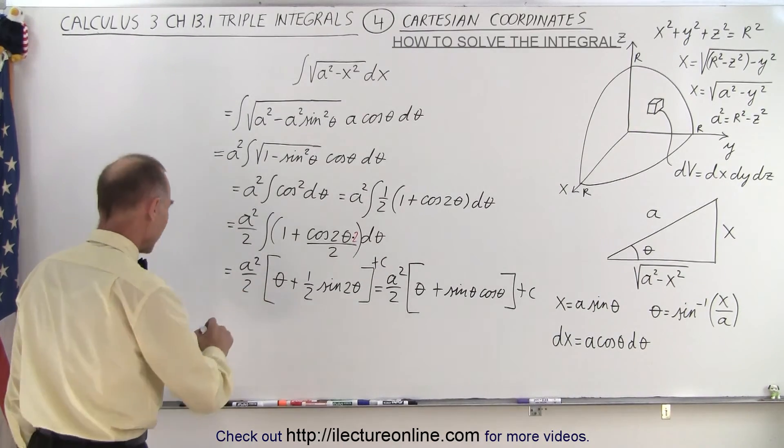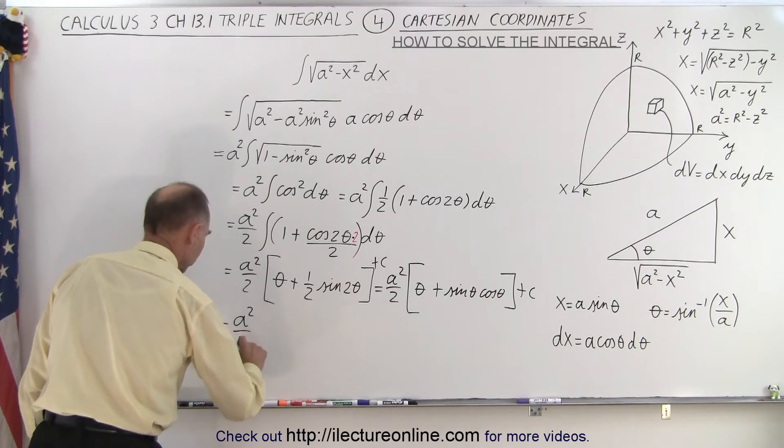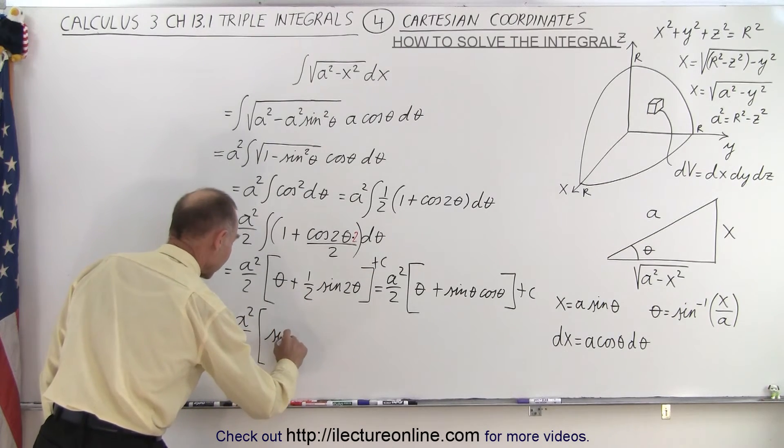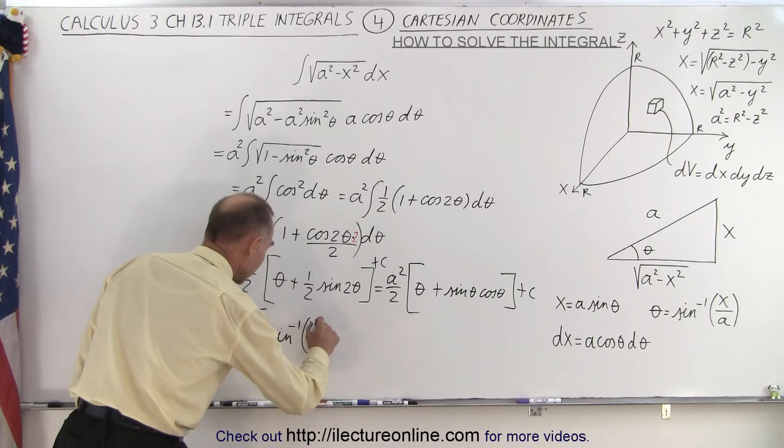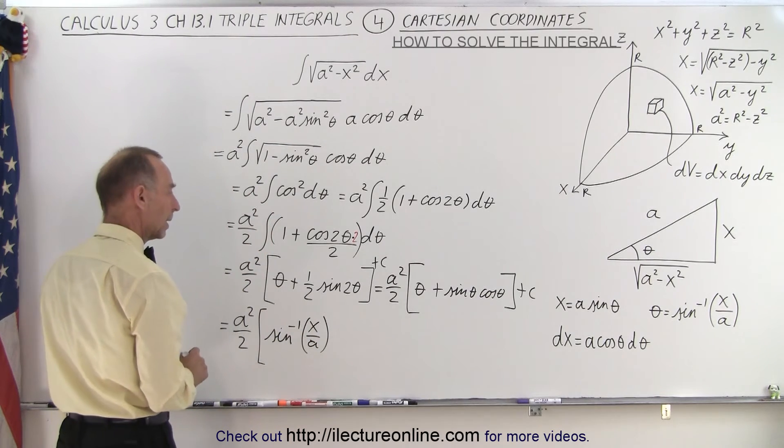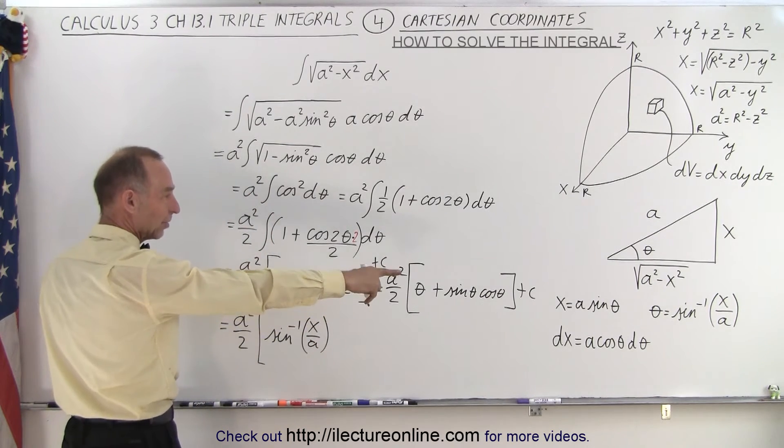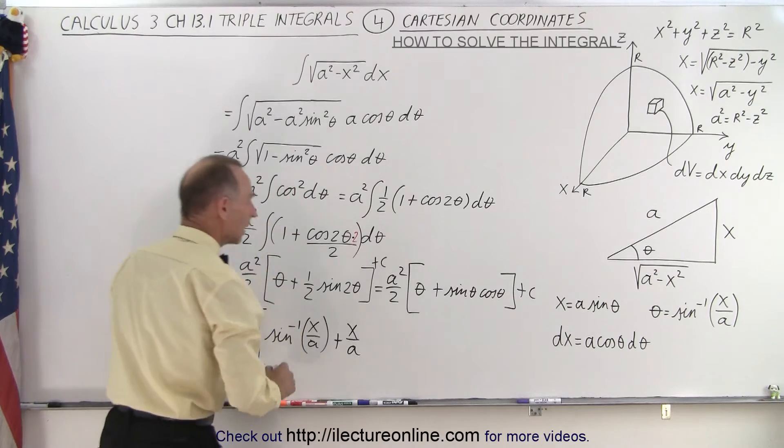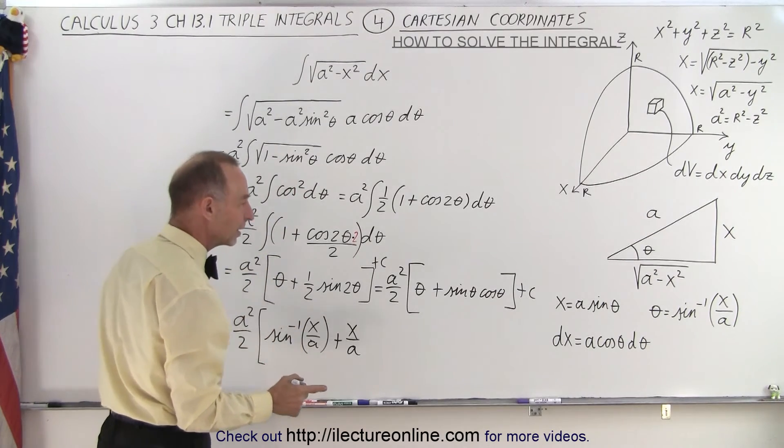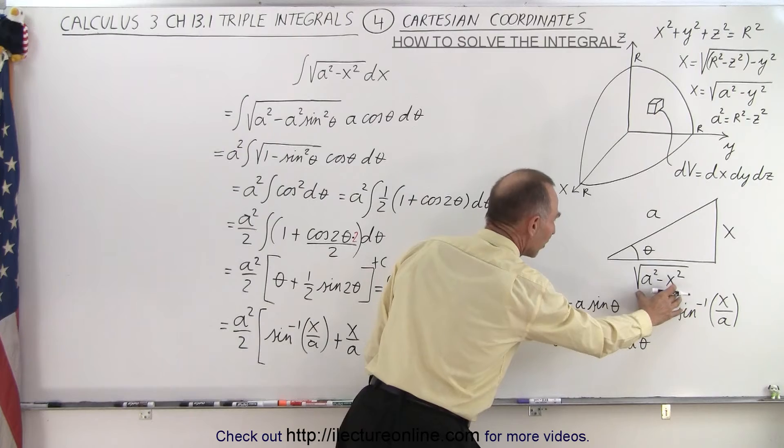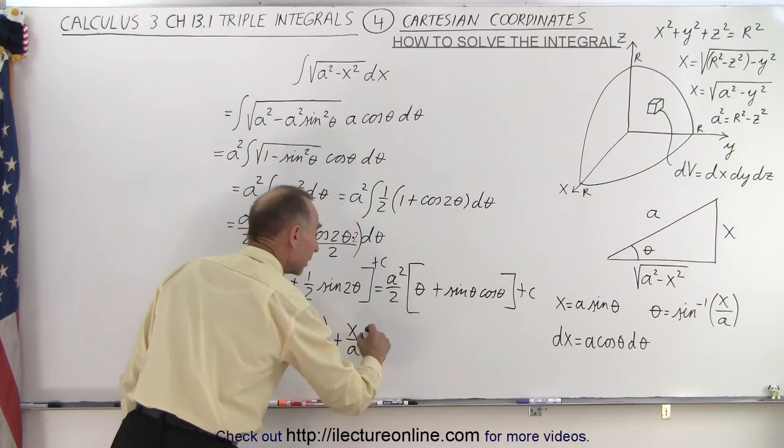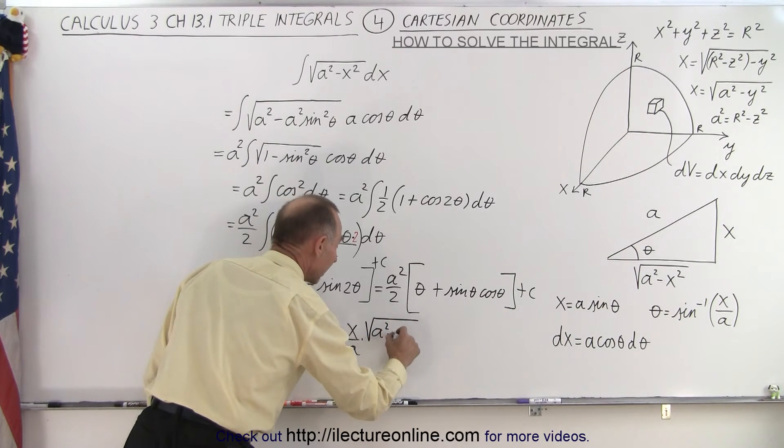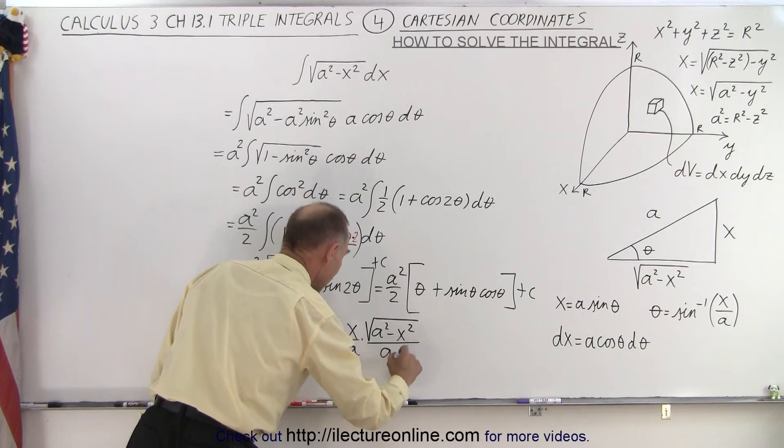I think now we can substitute back. So this is equal to a squared over 2 times theta is equal to the inverse sine, that's where that inverse sine came from, of x over a, plus the sine of theta. Now the sine of theta would be x over a, so it would be plus x over a, times the cosine of theta. Now the cosine of theta would be the adjacent side over the hypotenuse. So it would be times the square root of a squared minus x squared divided by a.